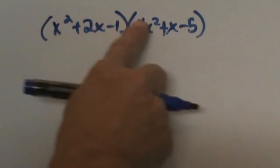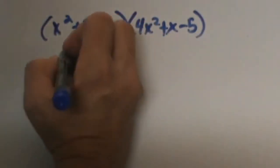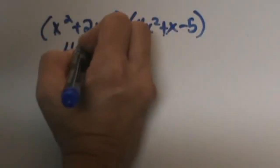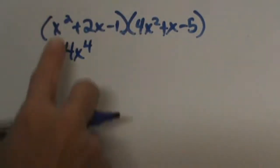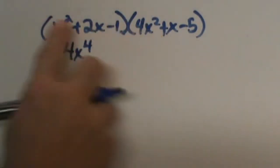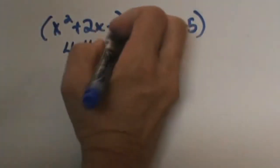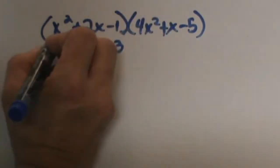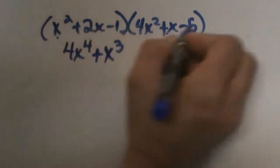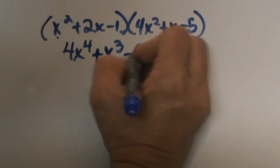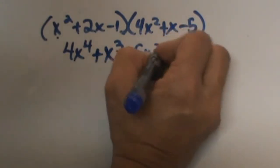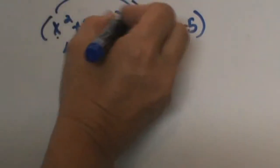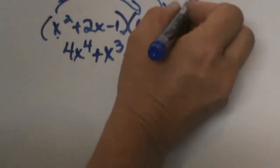x squared times 4x squared gives me 4x to the fourth — be careful there. x squared times positive x is positive x cubed. x squared times negative 5 is negative 5x squared. Okay, so I've distributed the first term all the way in.